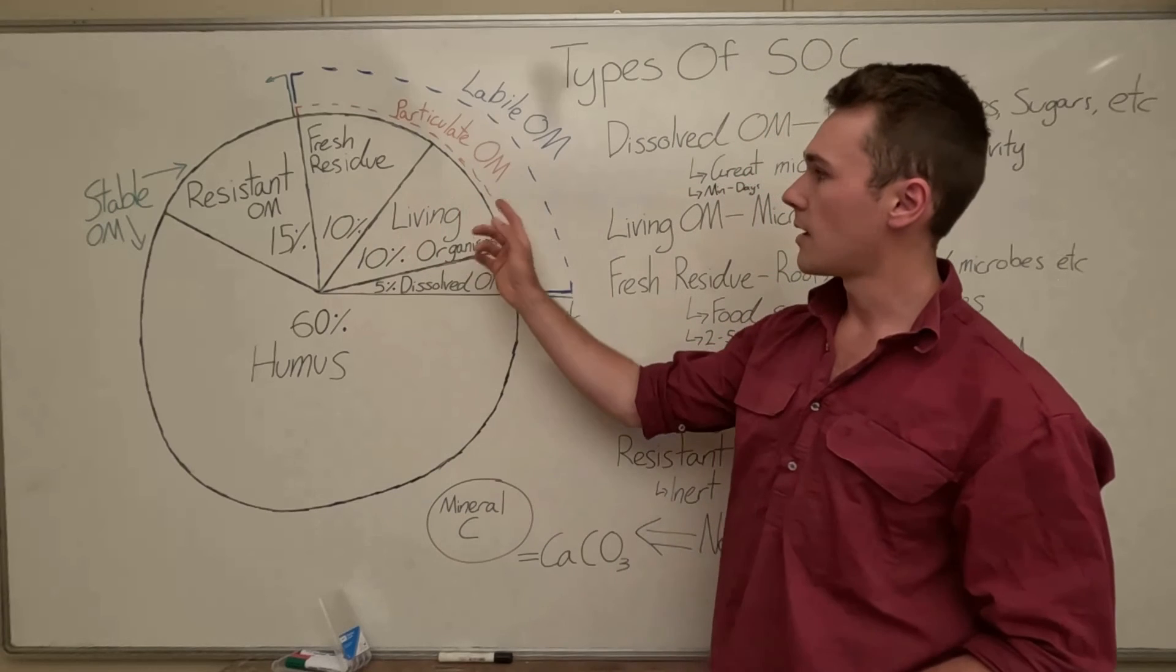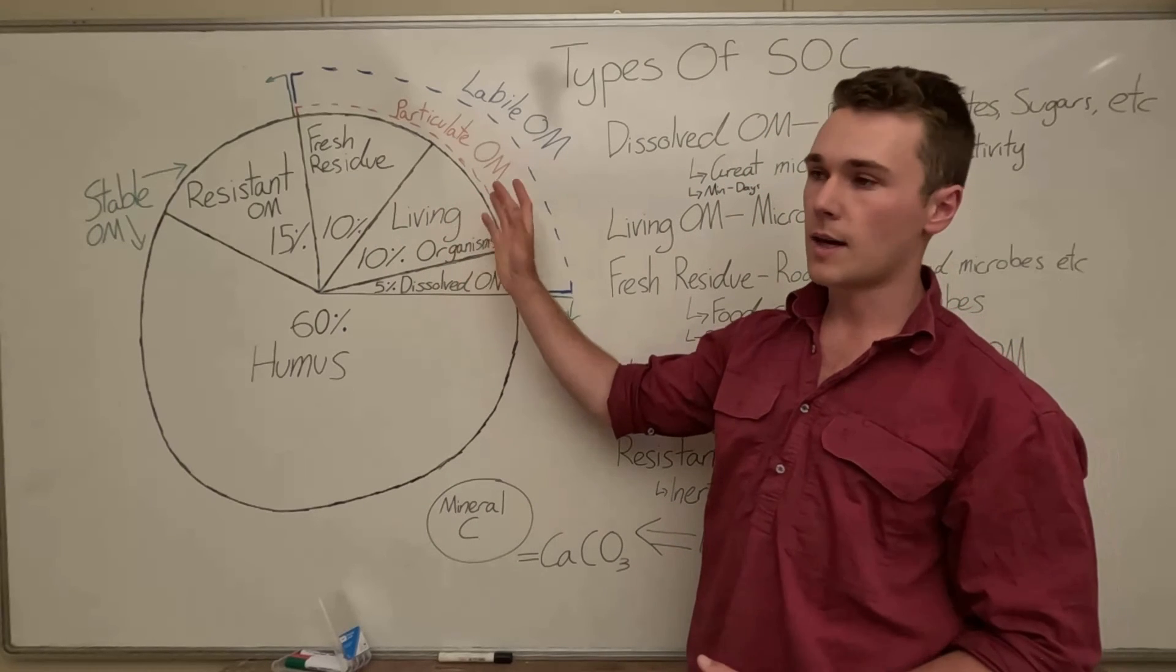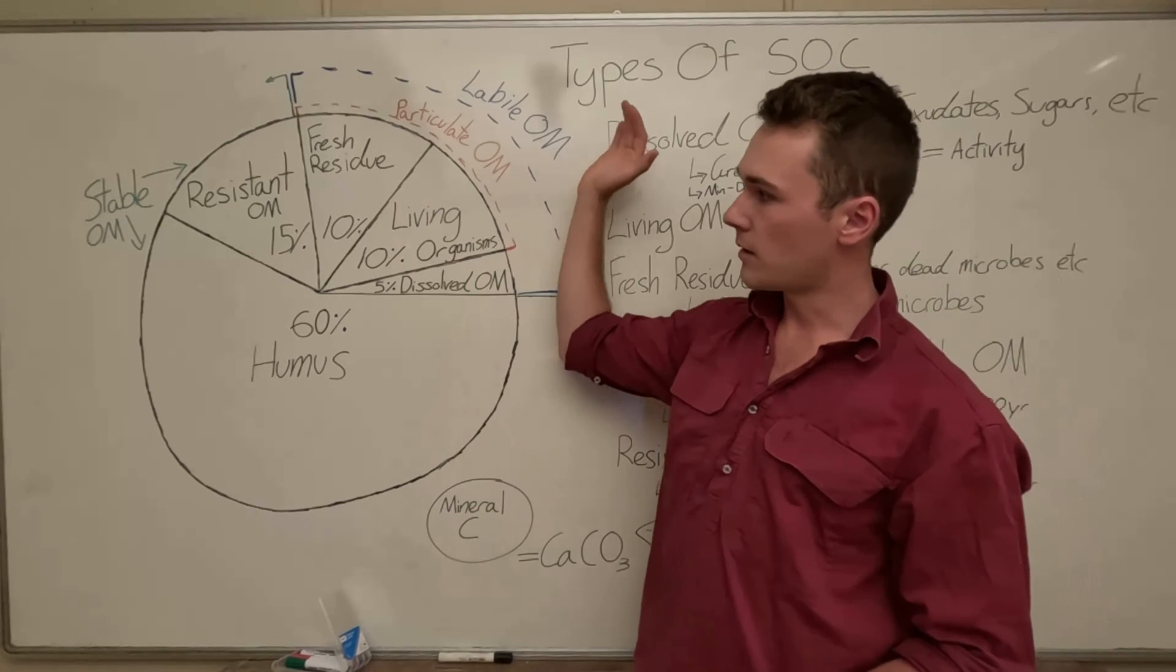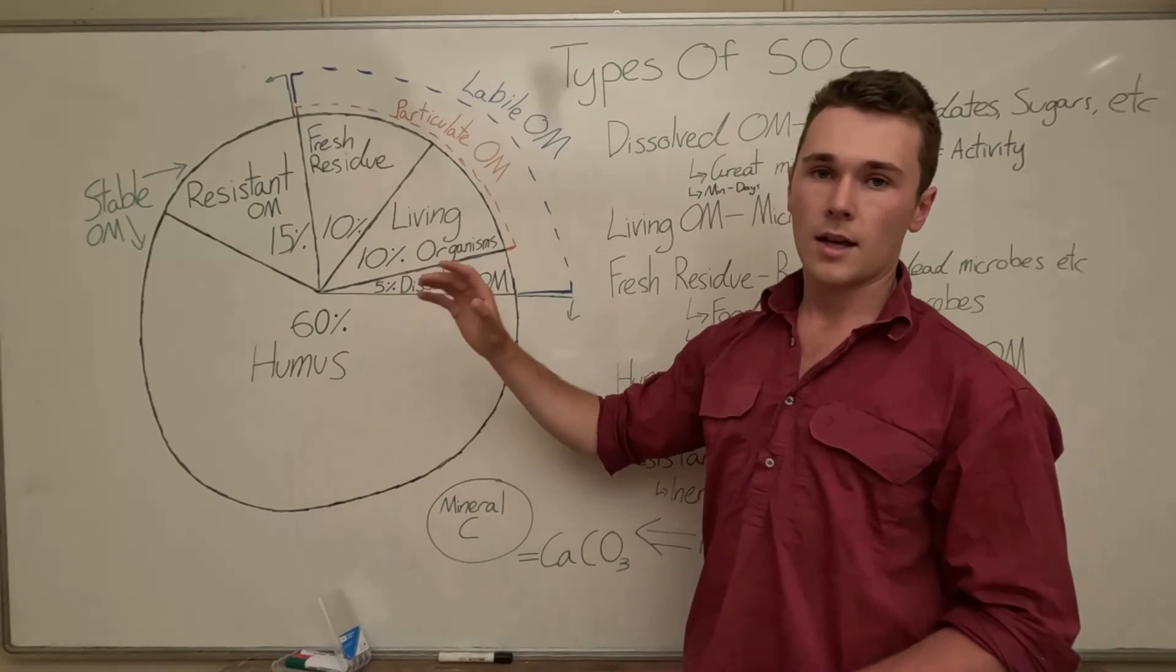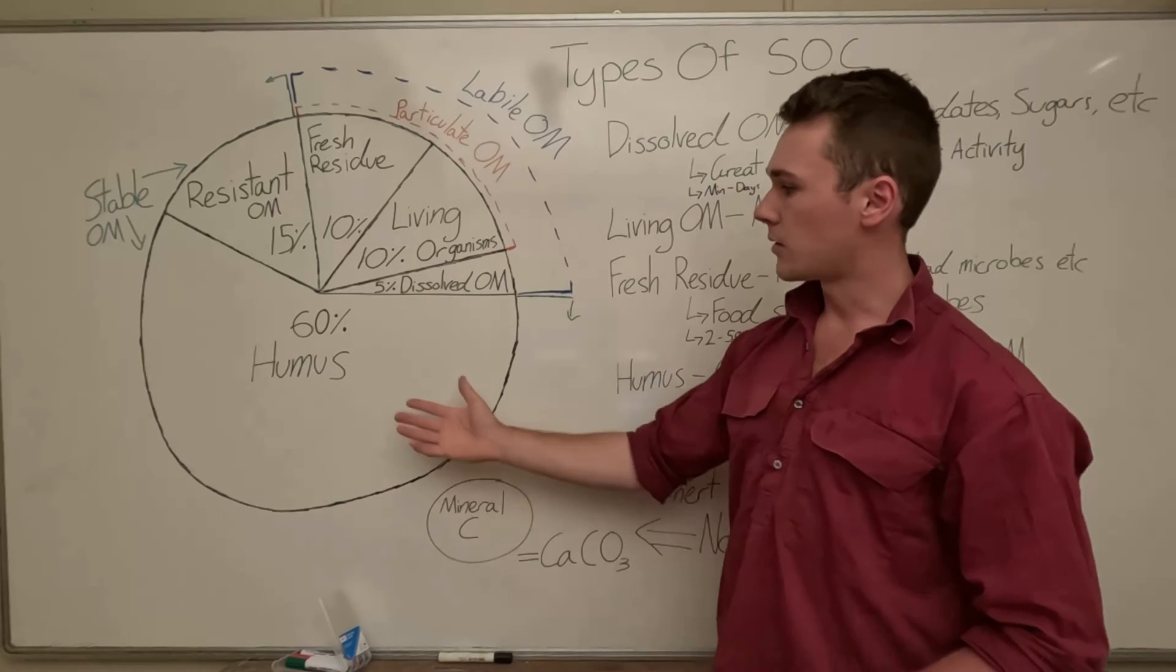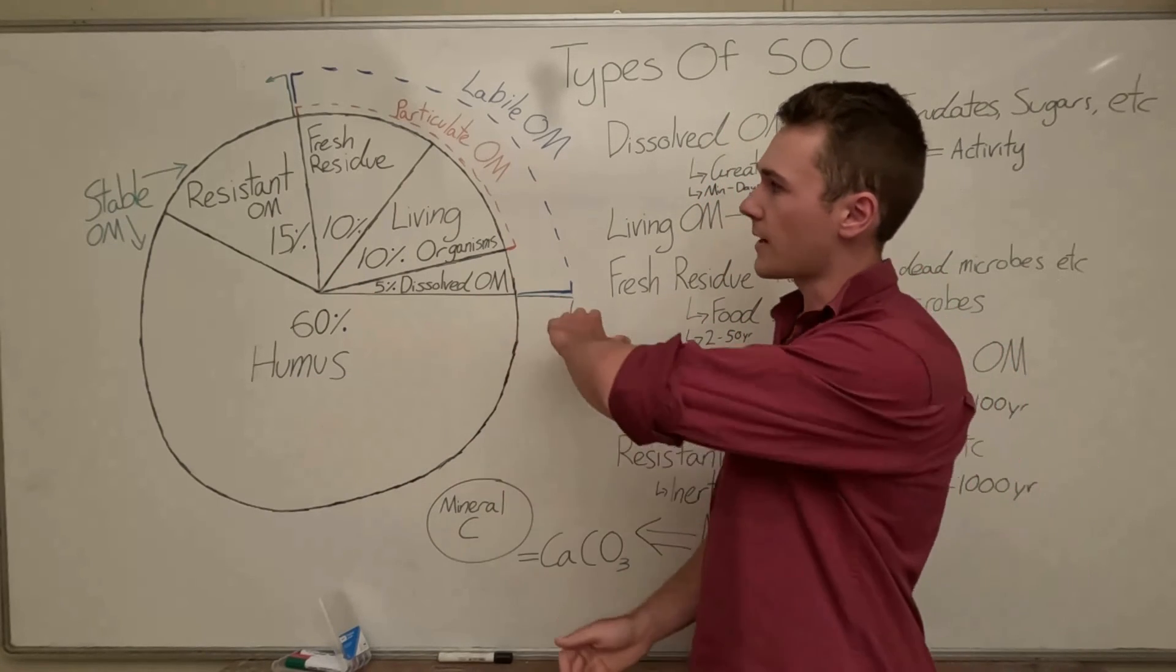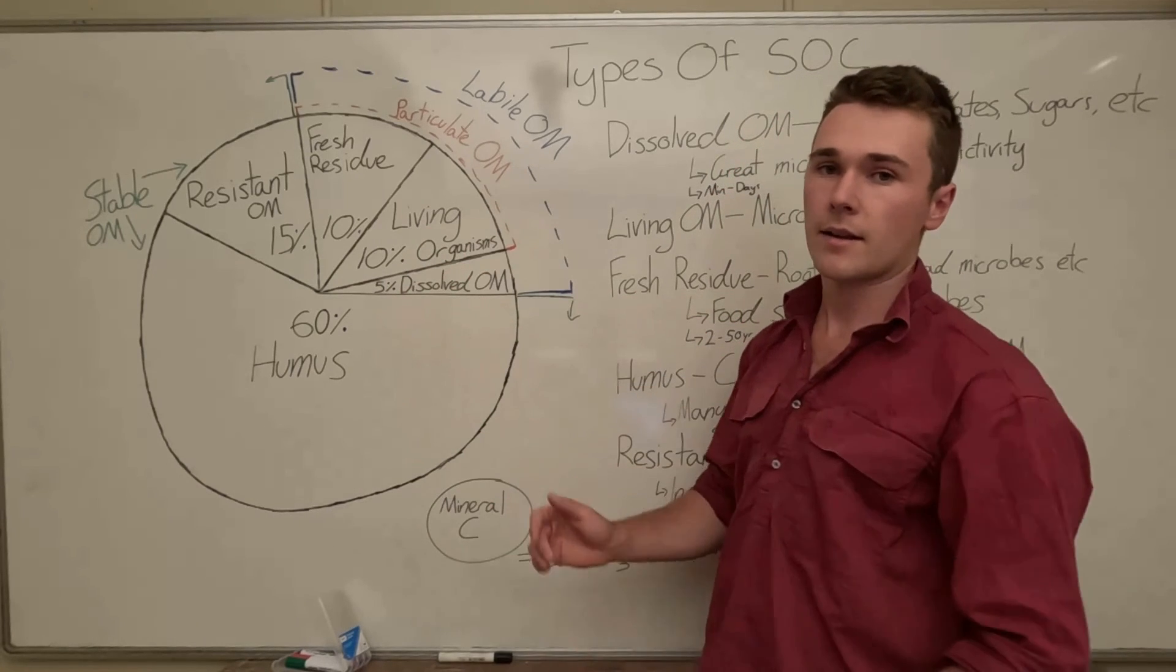They also have the total soil organic carbon on the test and we can determine the stable soil organic carbon by factoring out or subtracting our labile carbon out of that.